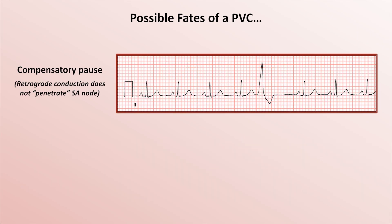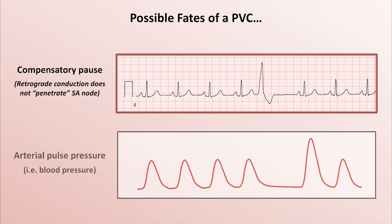An interesting clinical side note on these types of PVCs: they often cause patients to experience what is described as their heart skipping a beat. What the patient is feeling is not the PVC itself, as PVCs often don't even generate a palpable pulse. Instead, the extra post-PVC pause results in more diastolic filling time of the left ventricle, which further stretches the LV size, which through the Frank-Starling mechanism results in a single stronger-than-normal pulse. This is sometimes referred to as post-pause accentuation — so it's not the PVC that the patient is feeling, but rather the beat immediately after the PVC.